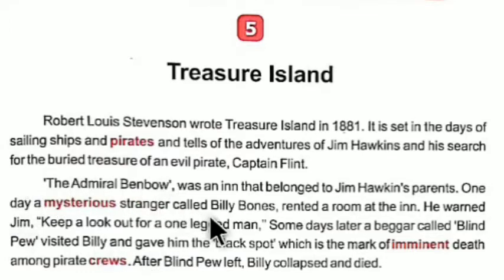Young Jim Hawkins lives with his parents in an inn named Admiral Benbow. A stranger named Billy Bonds came and rented a room. Billy Bonds warned Jim Hawkins to keep looking for a one-legged man. After some days, a beggar called Blind Pew came and gave Billy a black spot — a piece of paper that means an end of leadership among pirates. After getting this black spot, Billy fell down and died immediately.